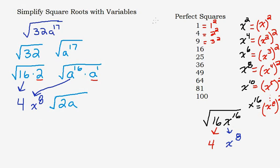The answer is 4a to the eighth times the square root of 2a. The 4 and a to the eighth come outside the square root, while 2 and a stay inside. That's your final answer.